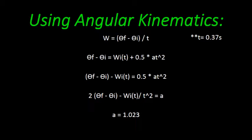W in the equations represents the angular velocity, where A represents the angular acceleration. Note that time was t, which equals 0.37 seconds.